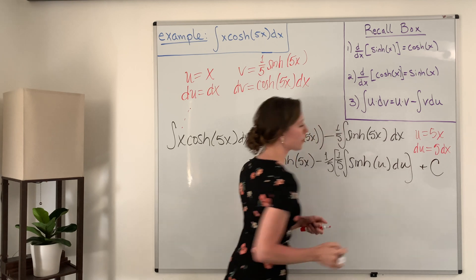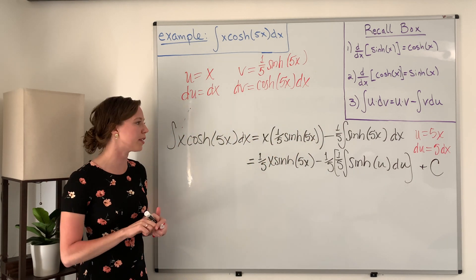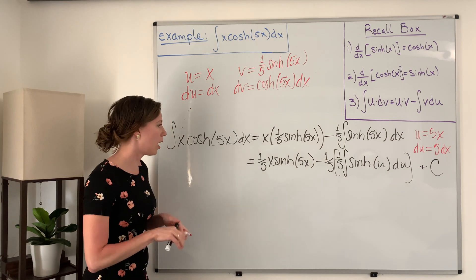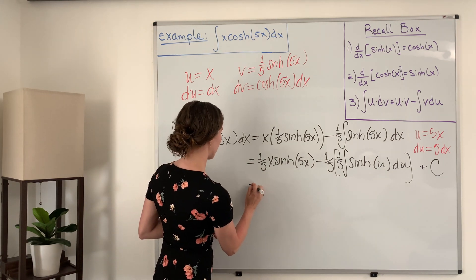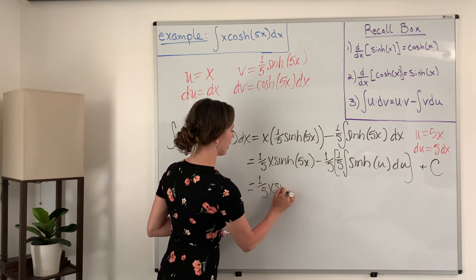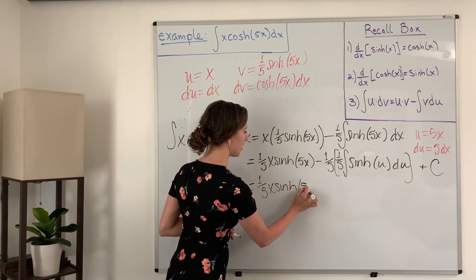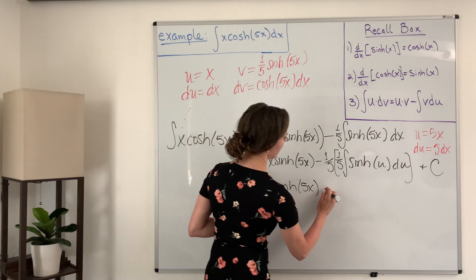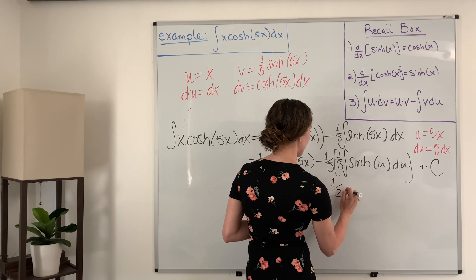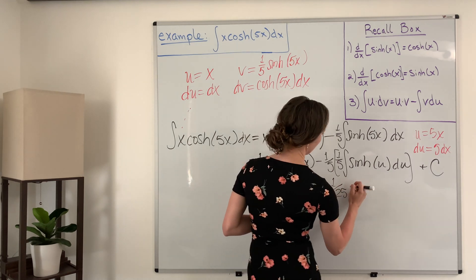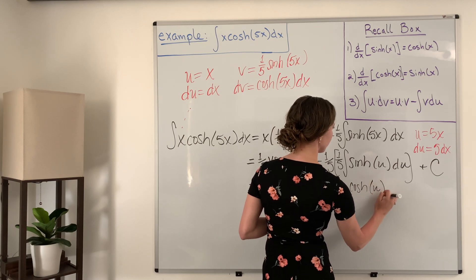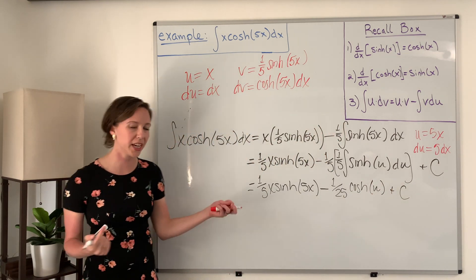And then we have plus C because we are integrating, and whenever we integrate without bounds we always have that constant. All right, so one more step and we'll be finished. We have one-fifth x hyperbolic sine of 5x minus, and if we multiply these one-fifths together we have one over 25, hyperbolic cosine of u plus C.